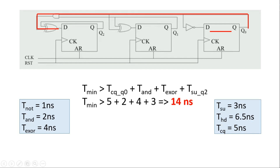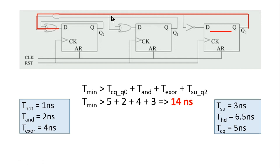The first path is Q0 going to the input of the same flop, the second path is Q0 going to the input of the second flop, the third path is Q0 going to the input of the third flop, the fourth path is Q1 going to the input of the same flop, the fifth path is Q1 going to the input of the last flop, and the last path is Q2 going to the input of the same flop. The critical path is marked because it has the most combinational logic delay.